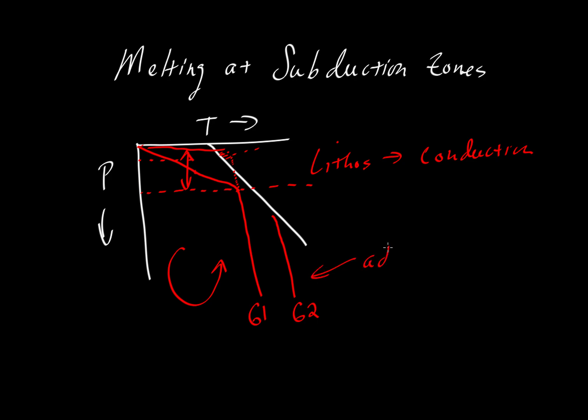Both of these are following a so-called adiabatic path, which is defined in another video. But that hotter geotherm can now cross the solidus and allow for partial melting where the colder geotherm would not.